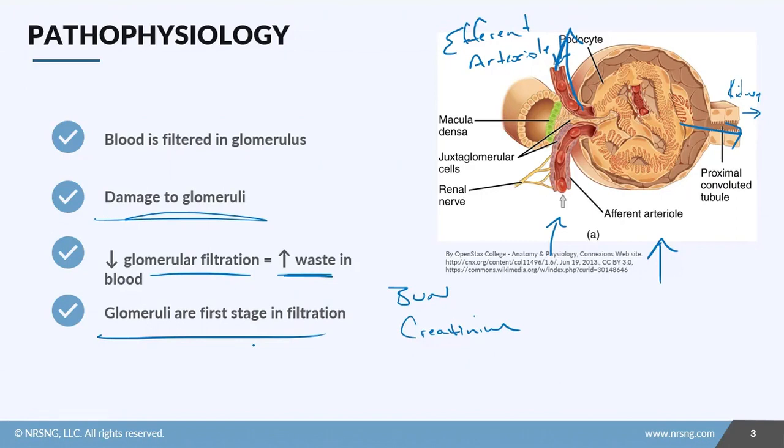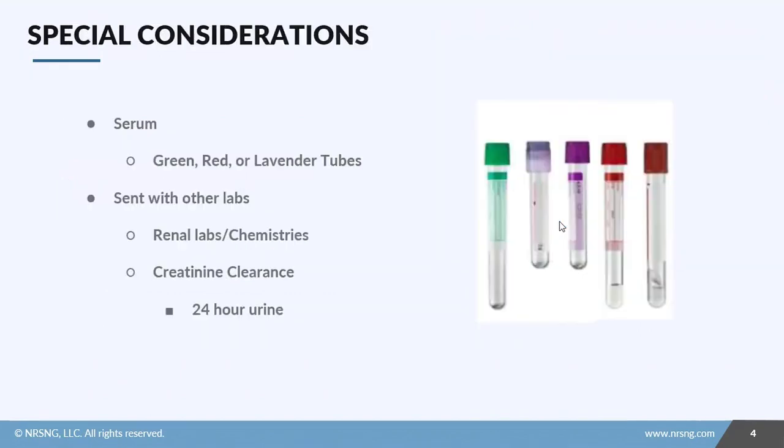Glomeruli are the first stage of filtration, so if we see that there's some sort of damage or injury to the glomeruli, we can actually make future assessments about kidney injuries or disease, current injuries or disease, and the current state or status of the kidneys and how well they're working.